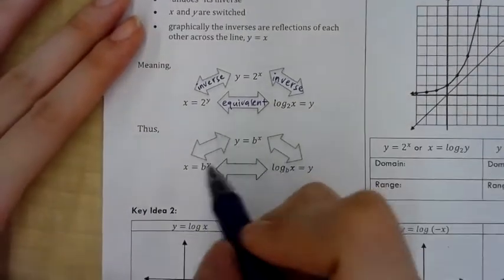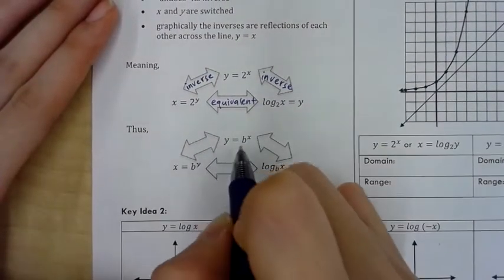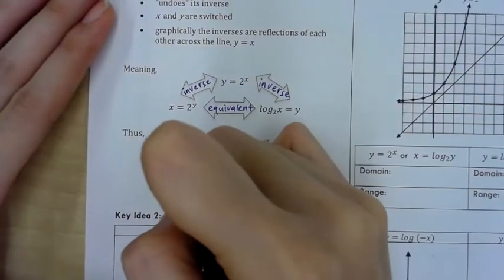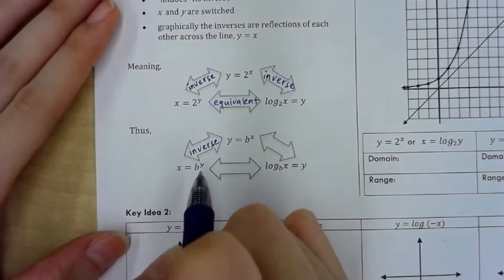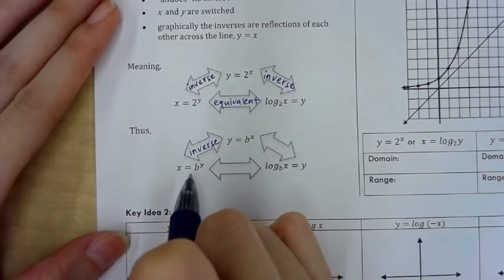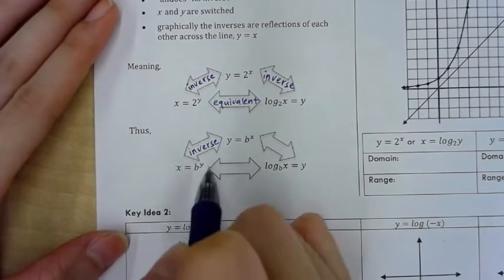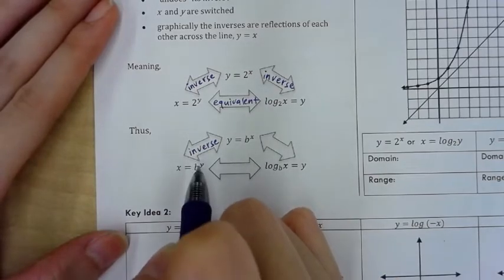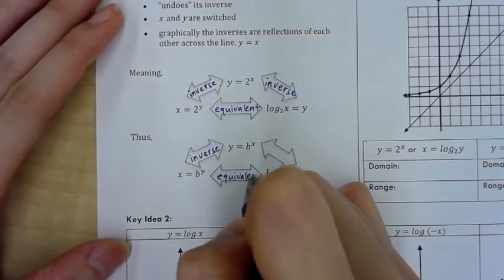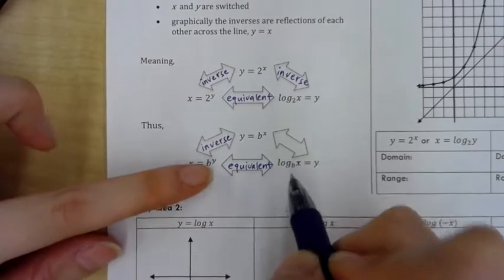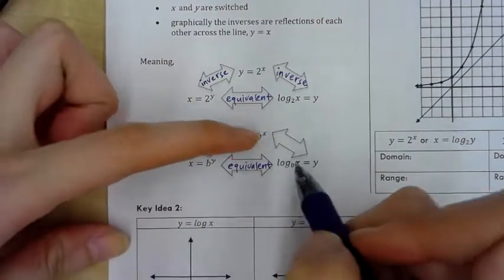Same idea, but with base b — nothing substituted in. When we switch x and y, that's how we find inverses. If I were to graph this inverse of the exponential function, I need to isolate y, so I can rewrite the exponential equation using log: log base b of x equals y. These are equivalent, so the exponential and log functions are inverses of each other.